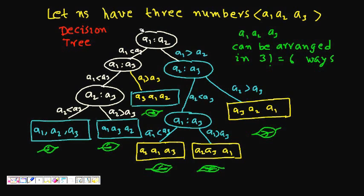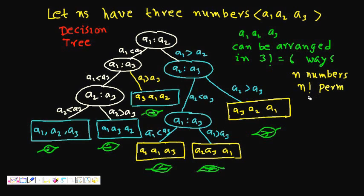We will take a very small example which will illustrate how to find the lower bound on number of comparisons. If we have three numbers a1, a2, and a3, then if we have to find the sorted sequence by brute force, we will try out all the n factorial permutations. Then we will check for each one of them which is sorted.